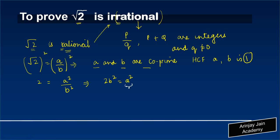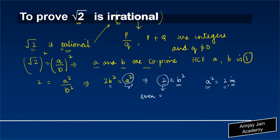Now if you notice, in this particular case, A square is written as 2 multiplied by B square. If the value of A square is 2 multiplied by B square, that means A square is an even number, because if the value of a number is equal to a multiple of 2, then it has to be an even number. So the value of A square could be equal to 2M, where M could be any number, but because A square equals 2 times some number, A square is an even number.